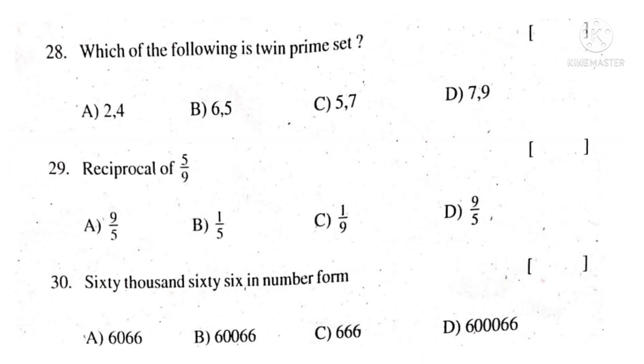28th question: which of the following is twin prime set? Observe that 5 and 7 are prime numbers and also observe the difference between them. 7 minus 5 is equal to 2. So 5, 7 are the twin prime set. The correct choice is C. Reciprocal of 5 by 9 is nothing but 9 by 5. The correct choice is either A or D. 60,000 - so write 60 comma, 66. Write 0 in place of 100 and write 66. The correct choice is B.